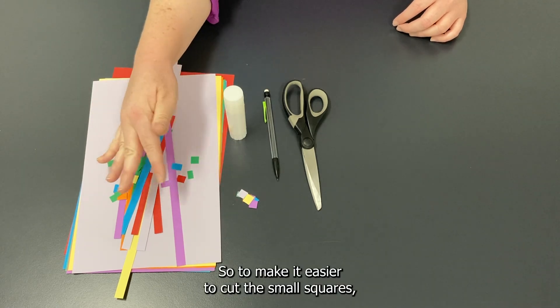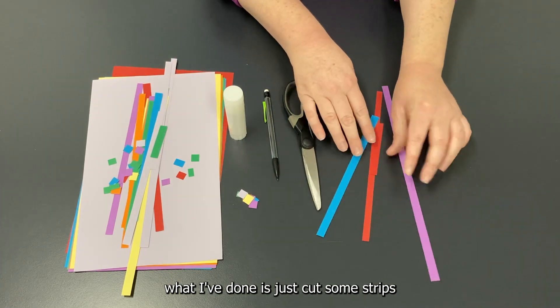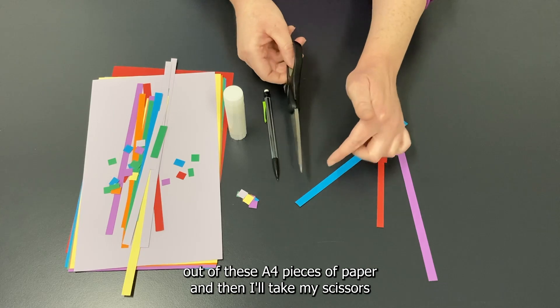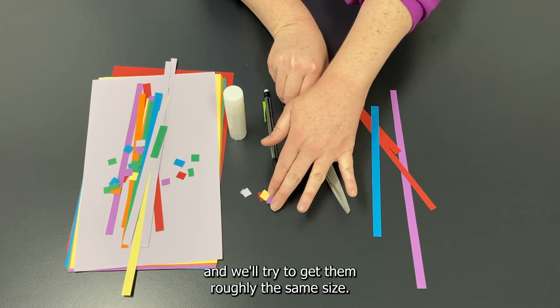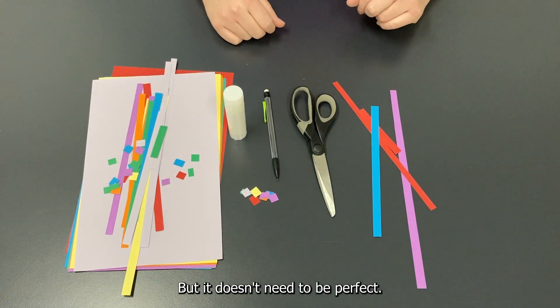So to make it easier to cut the small squares, what I've done is just cut some strips out of these A4 pieces of paper, and then I'll take my scissors and just cut along the strip to make the small squares. We'll try to get them roughly the same size, but it doesn't need to be perfect.